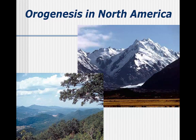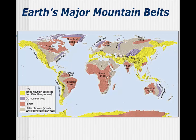In North America, we can see the results of two major orogenic episodes. Orogenesis refers to mountain building events, and we have two major mountainous regions on the continent: the Appalachians and the Rockies. Younger mountains are more angular because they haven't had their sharp edges removed by erosion yet, and they also tend to be taller with less vegetation. Most mountain building happens at convergent plate boundaries, but there are three different types depending on what types of plates are converging.